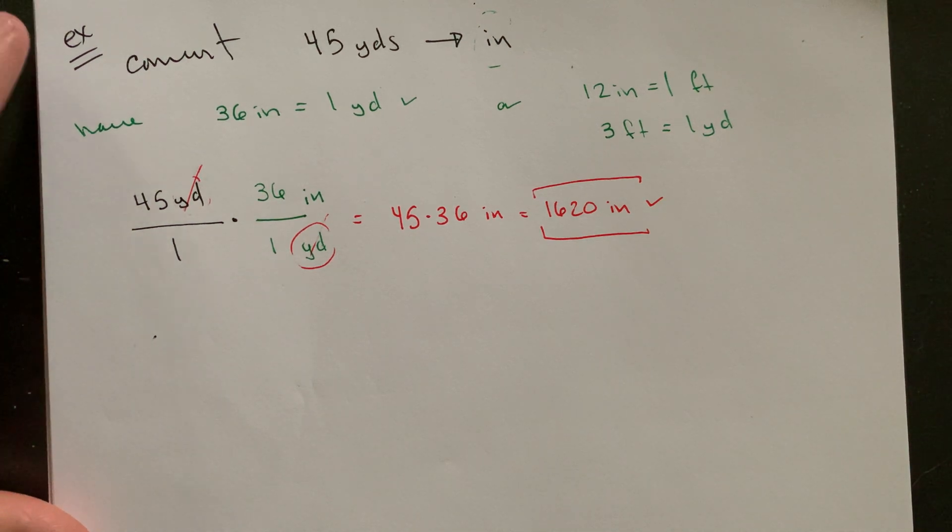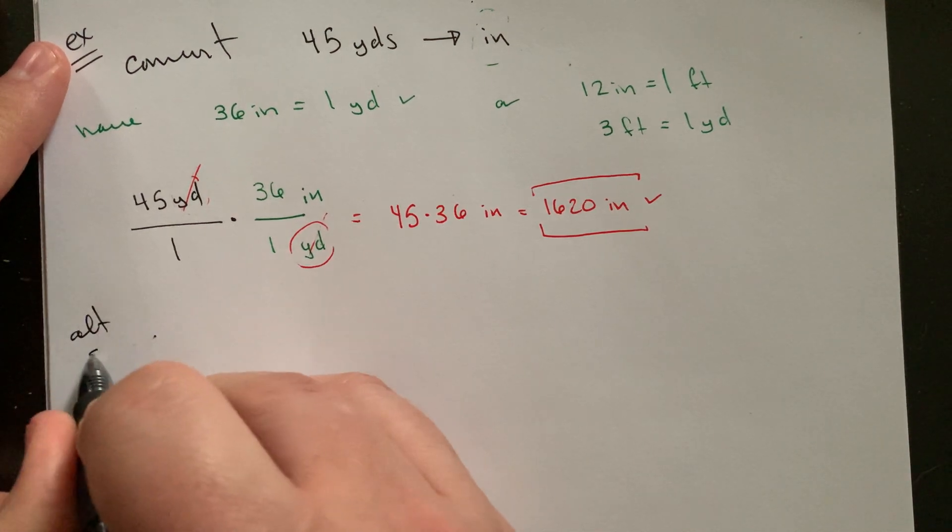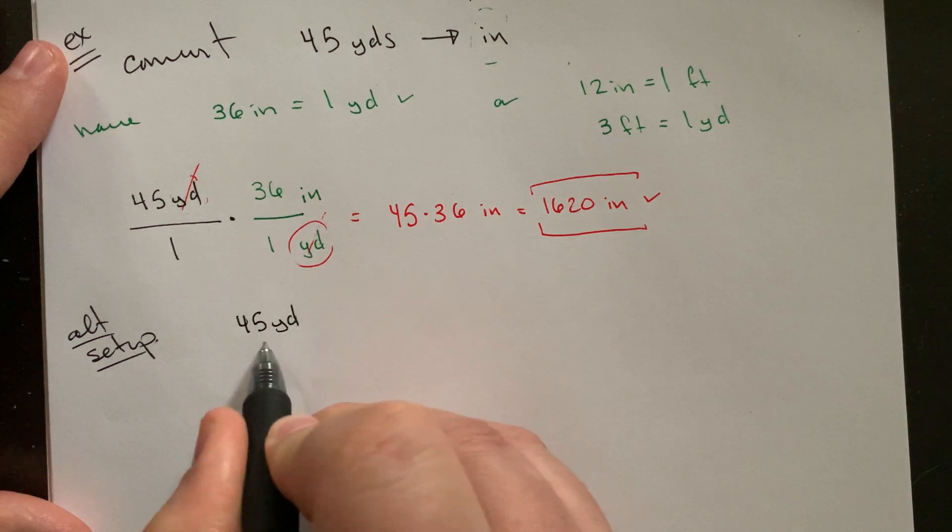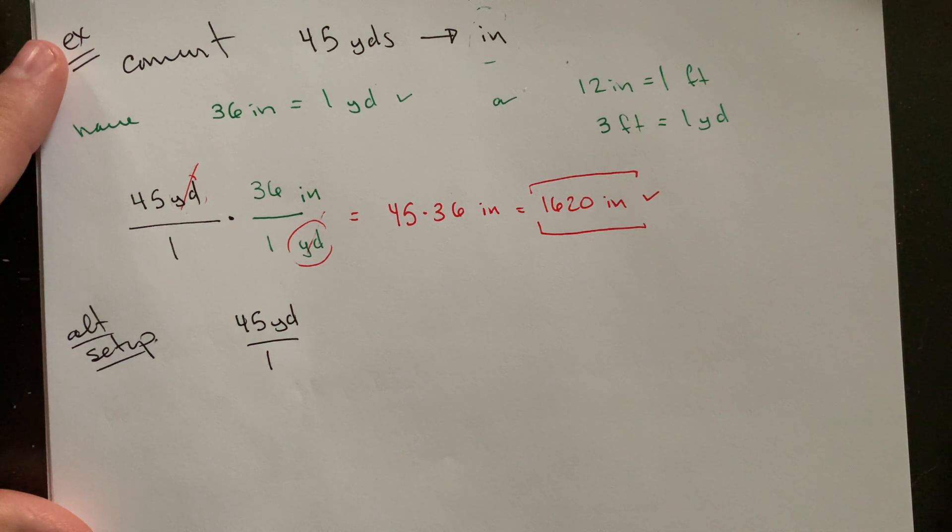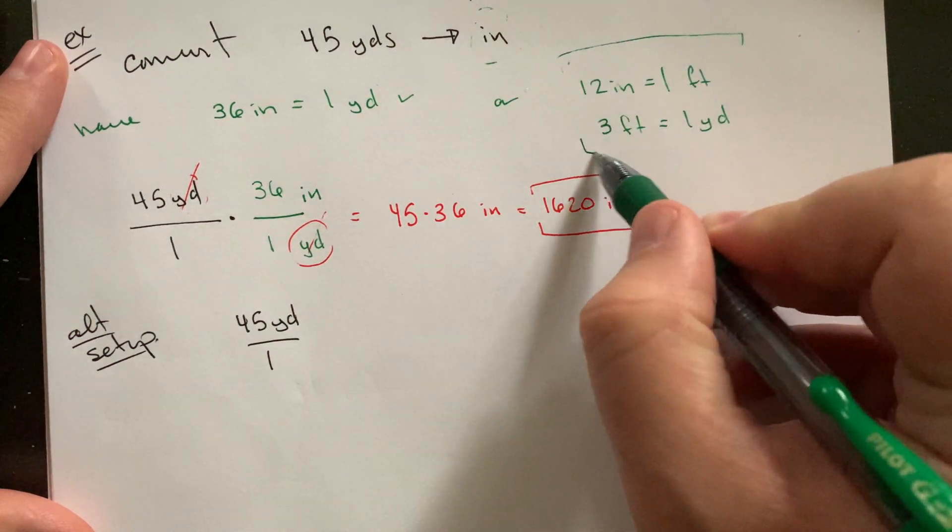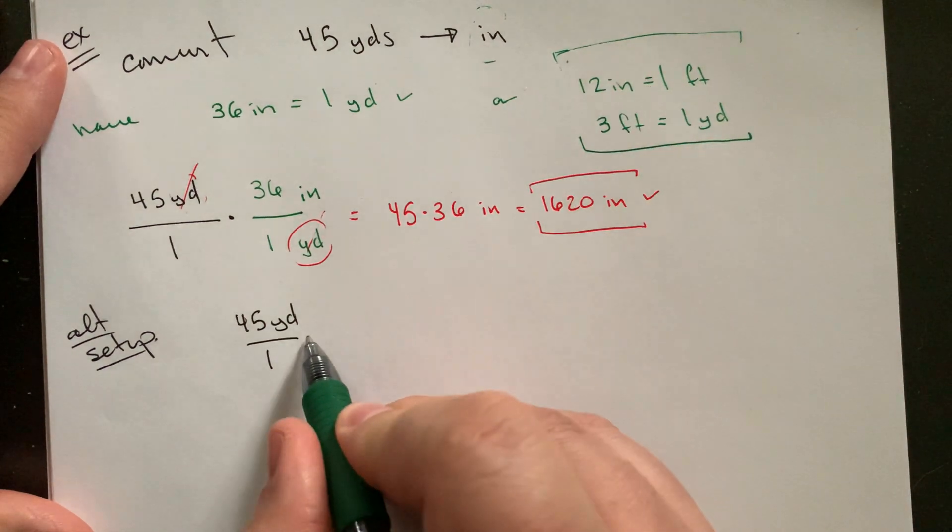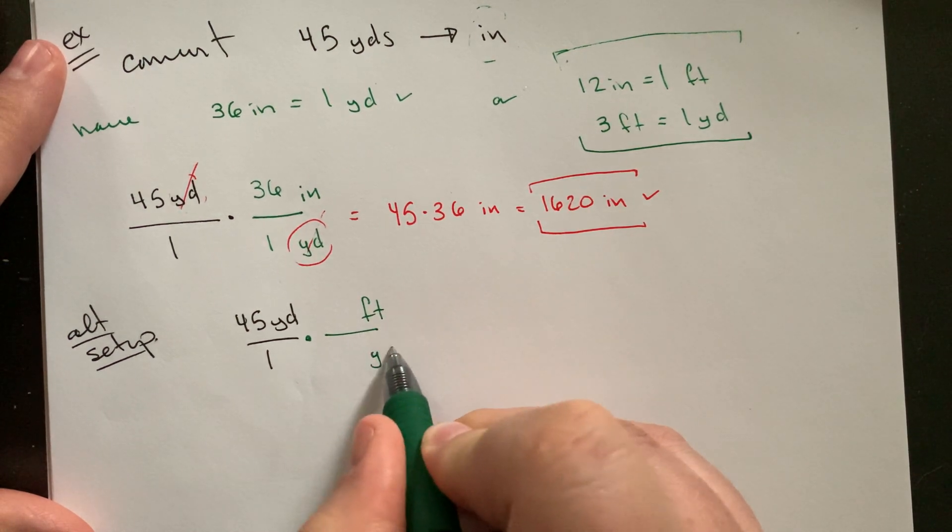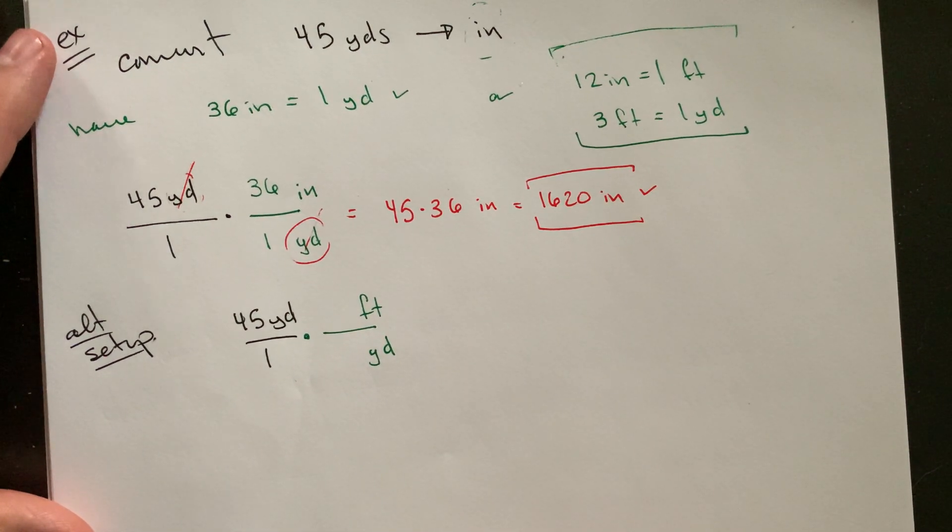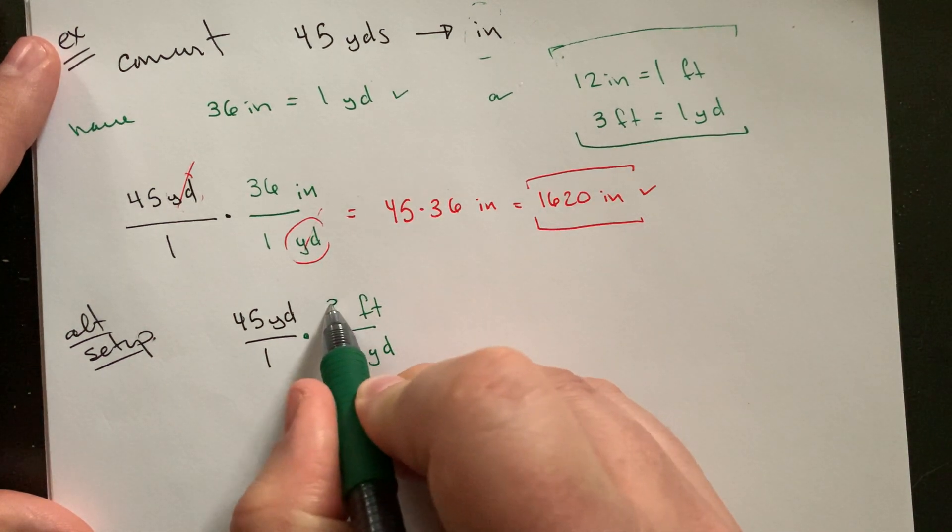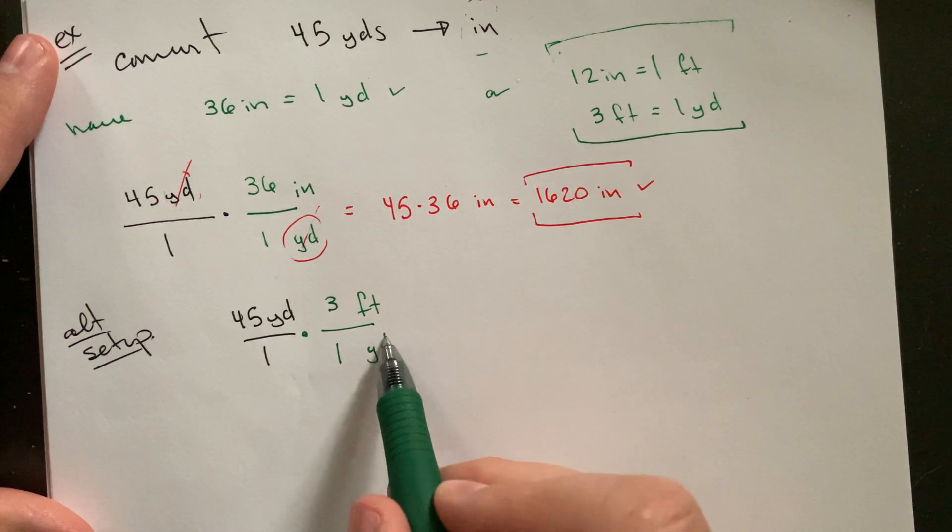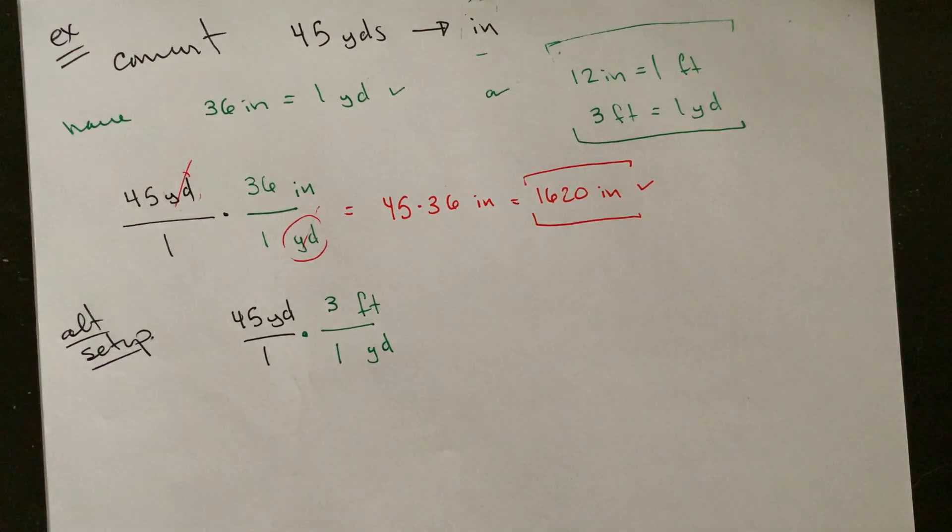An alternate version of this, you can actually set this up as a double conversion. And so you can go 45 yards over one. You can use these two conversions. So you can actually set it up where you go from yards to feet as an in-between. So we know that there are three feet for every one yard. So if you multiplied that, yards would cancel, and you'd have 45 times three would be 135 feet.